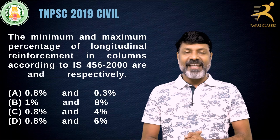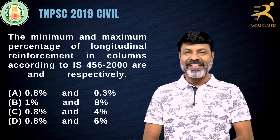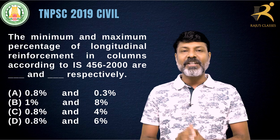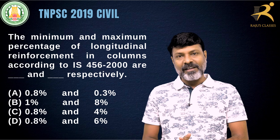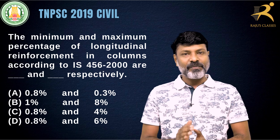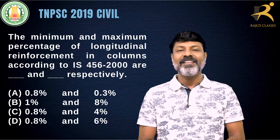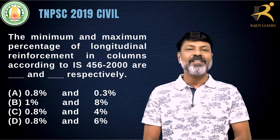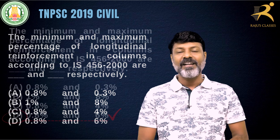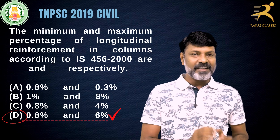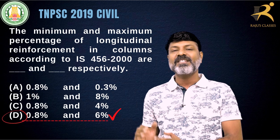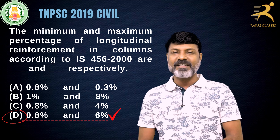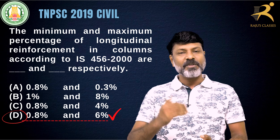In the 2019 Civil AEE exam, there is a simple question about RCC: what is the minimum and maximum longitudinal reinforcement in a column as per IS 456-2000? The answer is very simple — the minimum is 0.8% and the maximum is 6%. Therefore, 0.8% and 6% are the correct answer, and option D is correct.